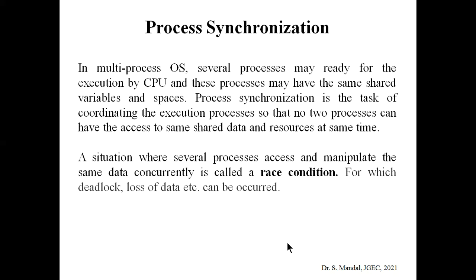Process synchronization is a task that coordinates the execution of processes such that no two processes can have access to the same shared data, resources, or variables at the same time. If a situation occurs where different processes can access and manipulate the same data concurrently, that condition is called a race condition — meaning two or more processes race among themselves to access the same data.